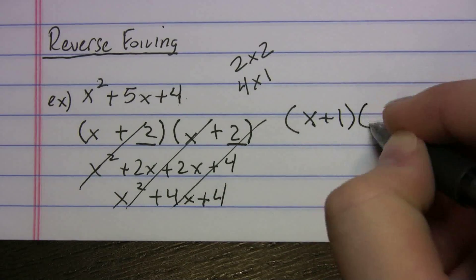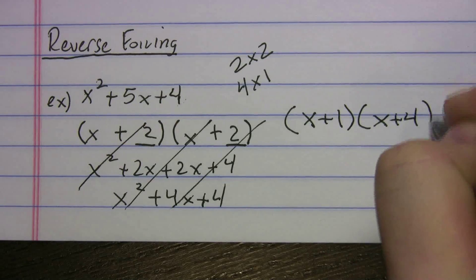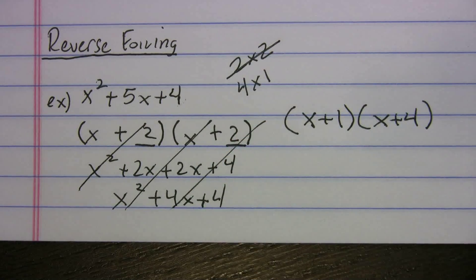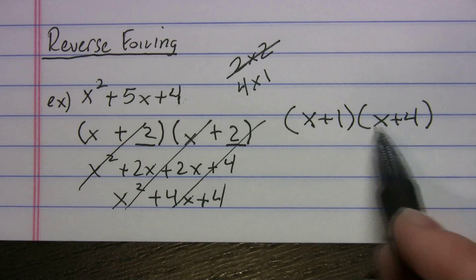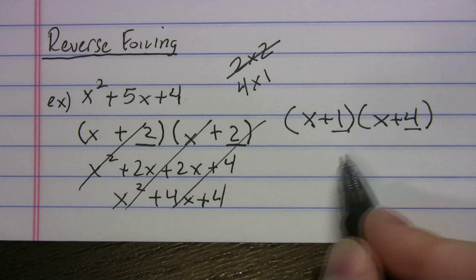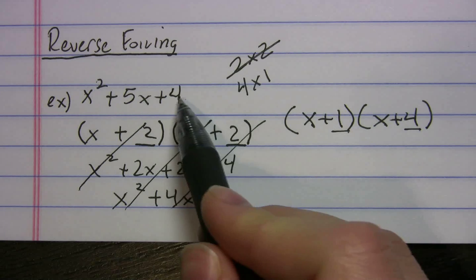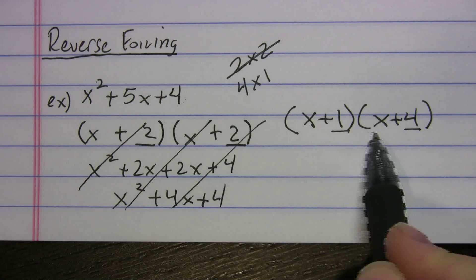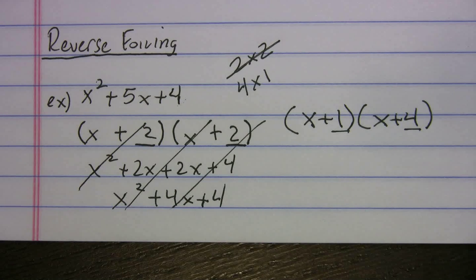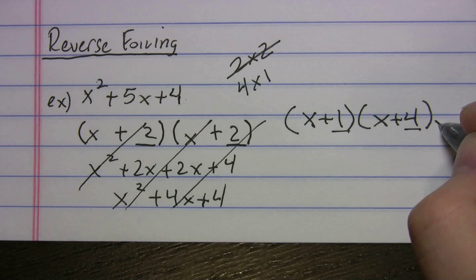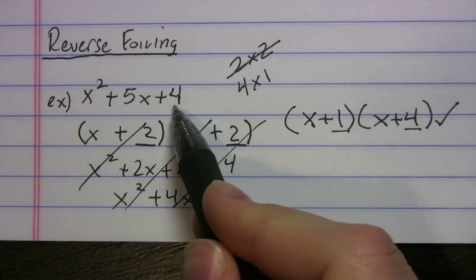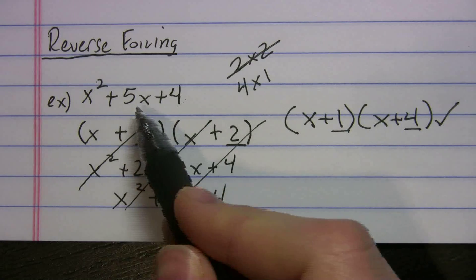So the correct answer has to be (x + 1)(x + 4). That makes sense because 1 times 4 gives us 4, and then 1x plus 4x gives us 5x. The idea is you want your last terms to multiply to the last number and add to the middle number.